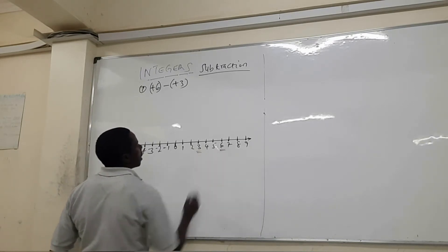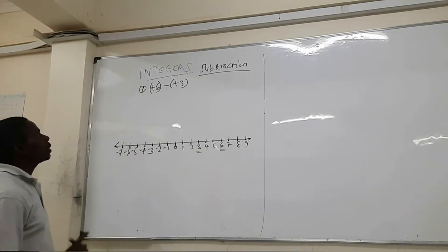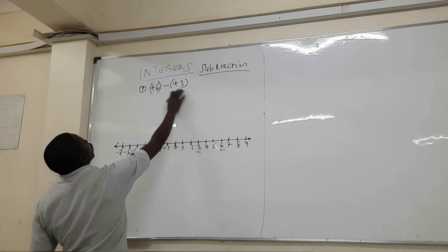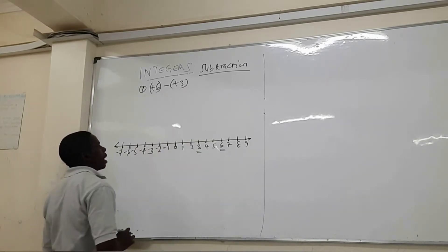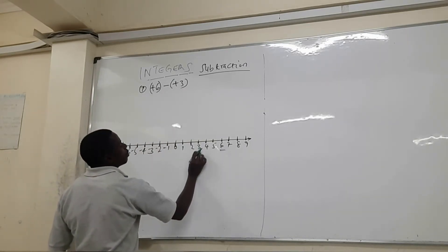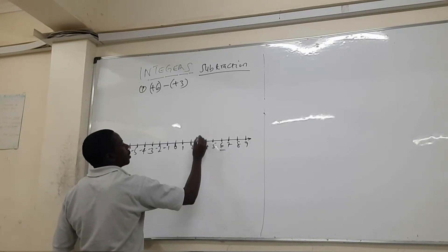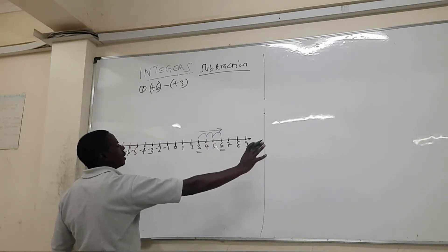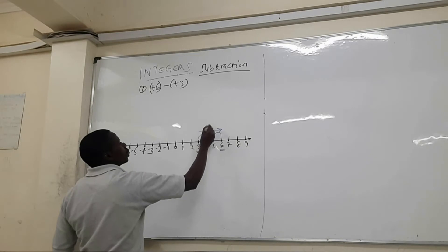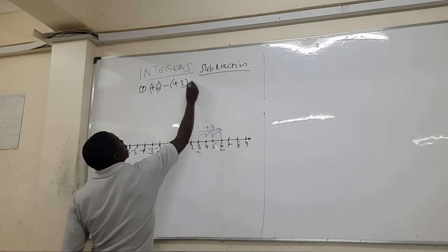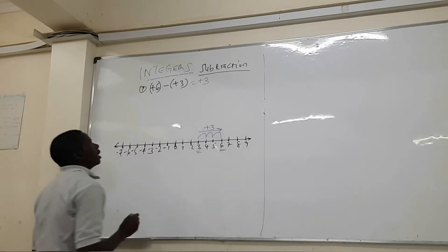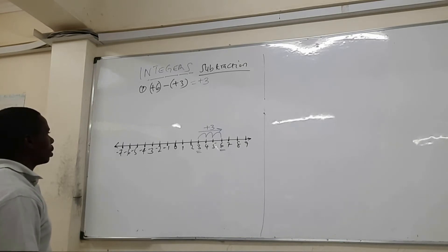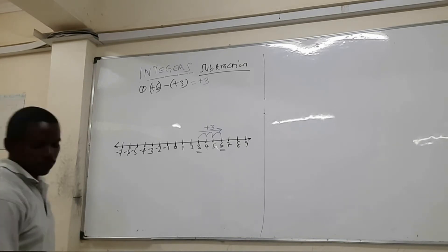Plus three is here and plus six is right there. Because we're subtracting, we start from the second number, which is plus three, then we move to plus six — one, two, three. We have moved to the right-hand side, meaning the answer is positive three. So plus six minus plus three gives us positive three.